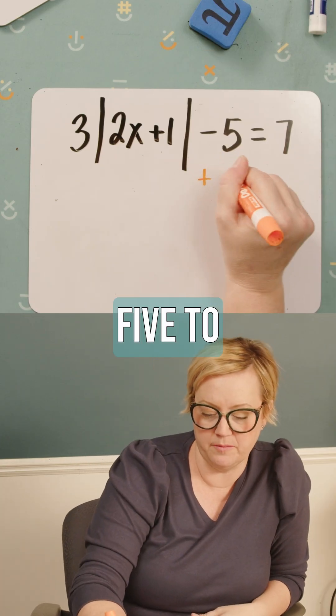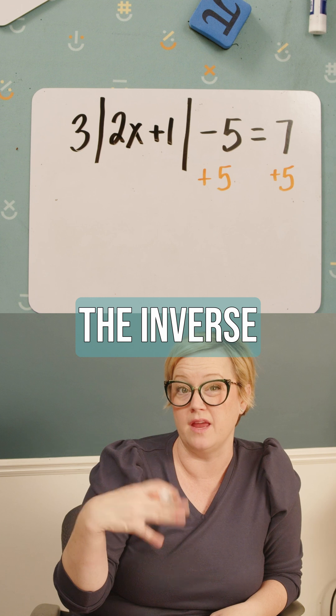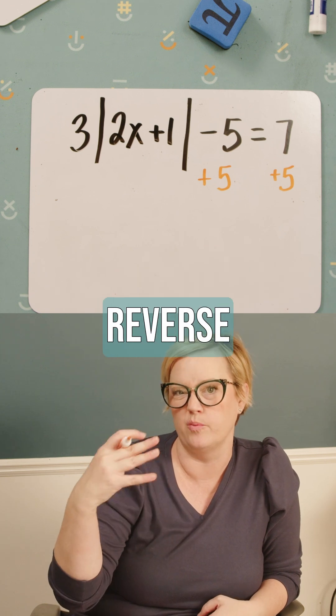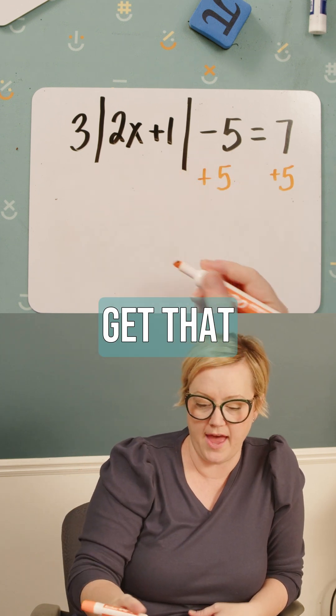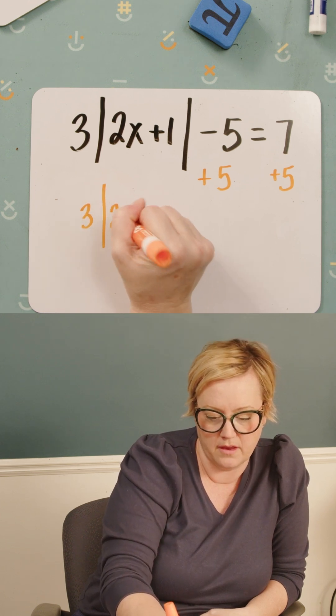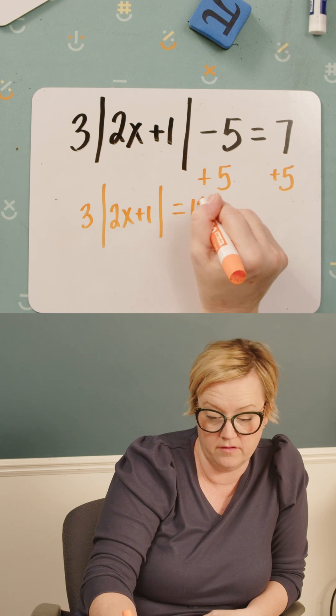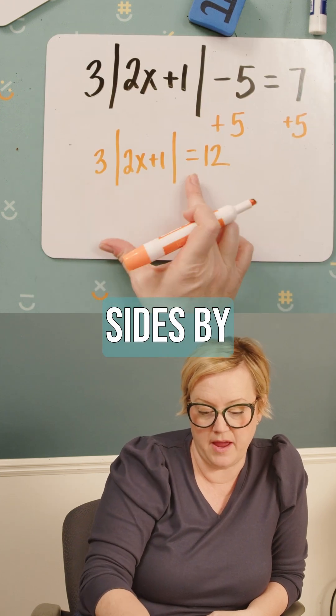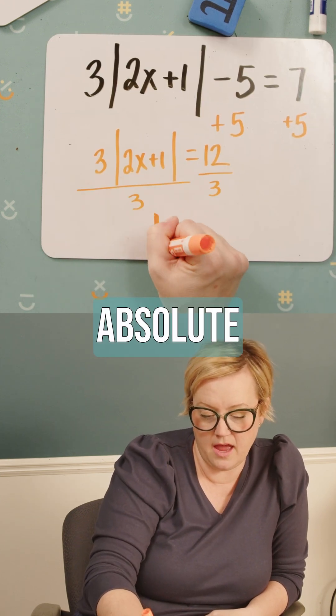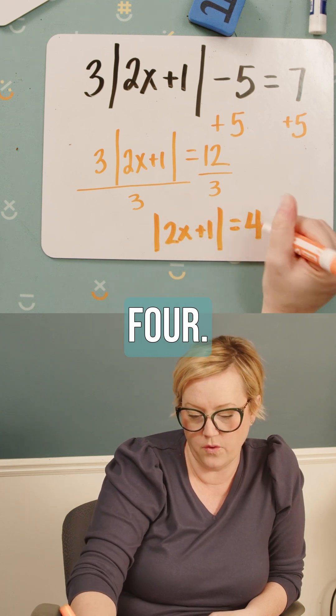So I'm gonna add five to both sides. Since I'm solving an equation, this is where I do the inverse operation. So I go in reverse PEMDAS order, right? So now I have three times the absolute value of 2x+1 equals 12. And then I would divide both sides by three. So then I have the absolute value of 2x+1 equals four.